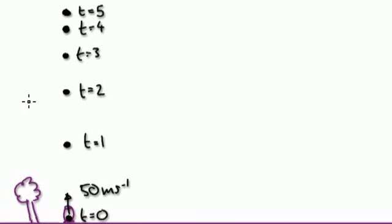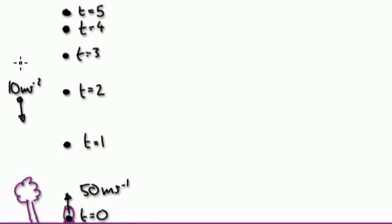Gravity is always pulling the cannonball downwards at 10 meters per second squared. Our initial speed is 50 meters per second upwards.